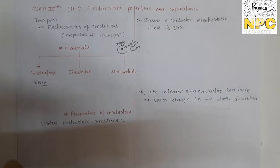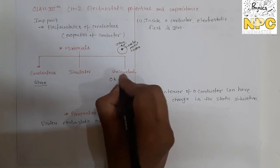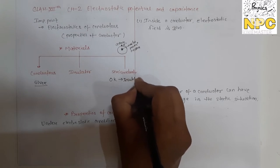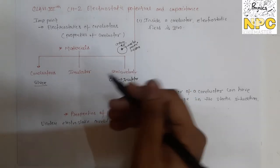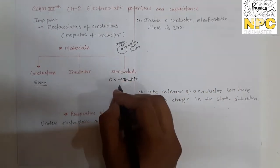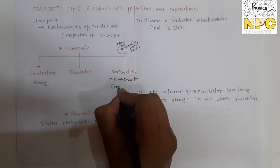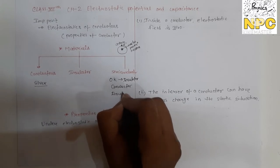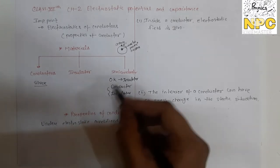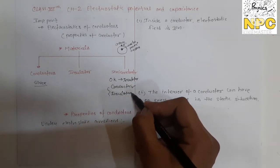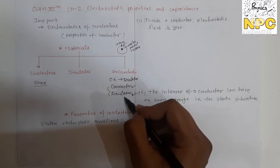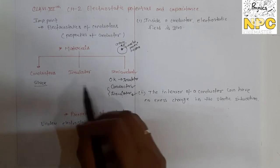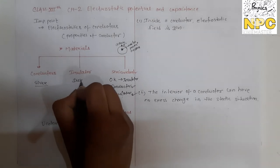The third type is the semiconductor. Semiconductors generally depend on temperature. At minimum temperature (0 Kelvin) they behave like insulators. But if temperature increases, some electrons become free, making them behave between a conductor and an insulator — with fewer free electrons than conductors but more than insulators. This type of material is called a semiconductor. Insulators are also called dielectrics.